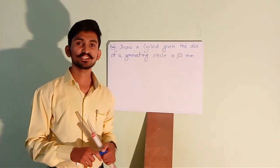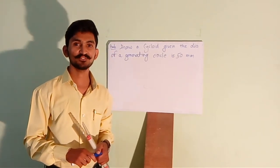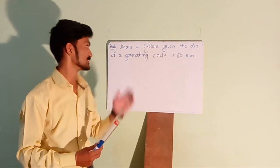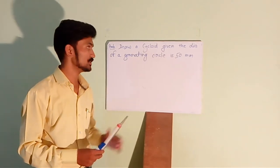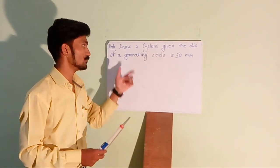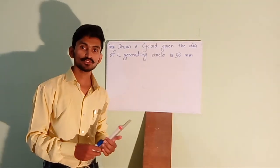Hello everyone, I am Konraj Komersing Artur. Welcome to Fly Raj Pools Towards Infinity. And today's question is, draw a cycloid given the diameter of a generating circle is 50mm.